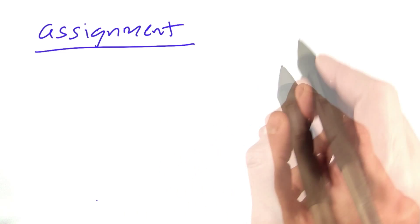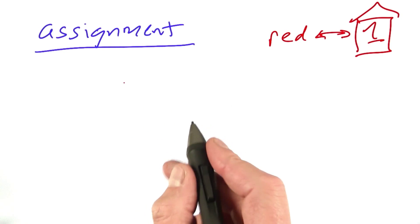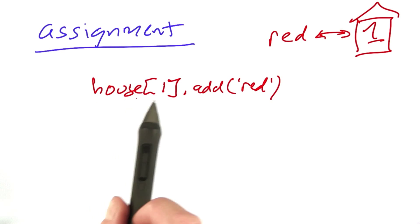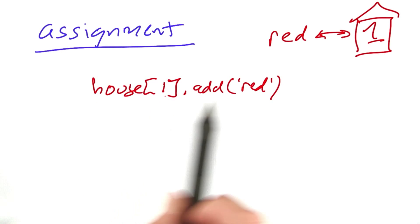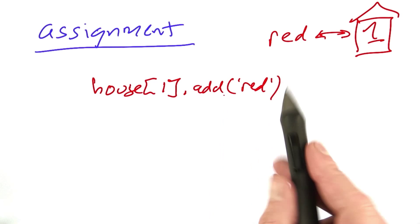If we want to assign red to house number 1, let's think about the ways in which we could implement that. Here's one possibility where we say we're going to have an array of houses. We take number 1 and we add red to its set of properties. That means that each house is represented as a set.